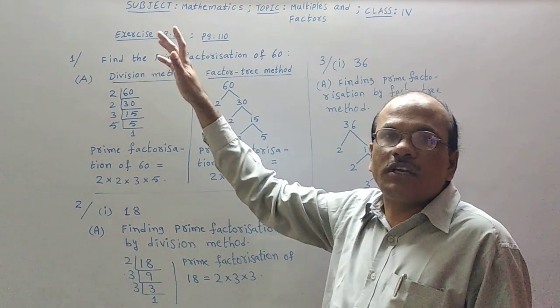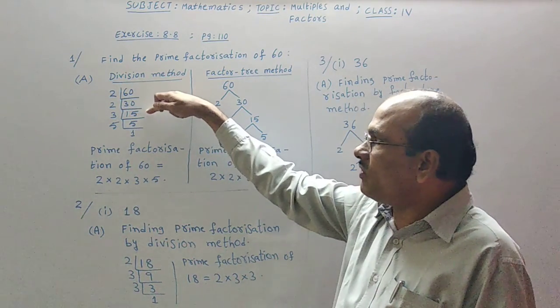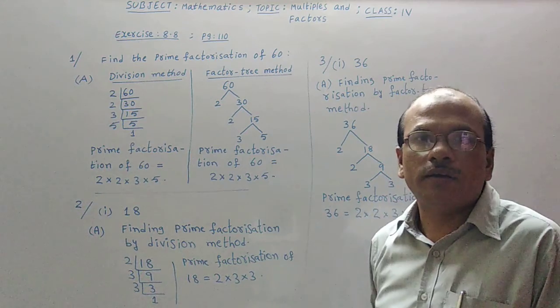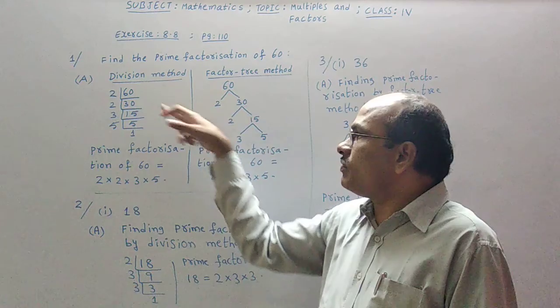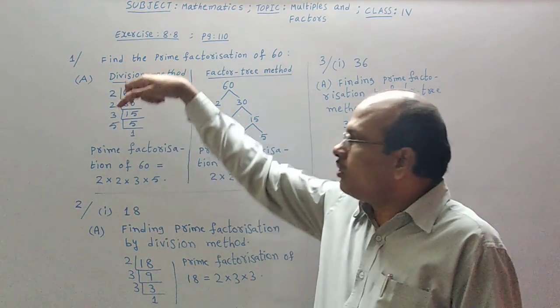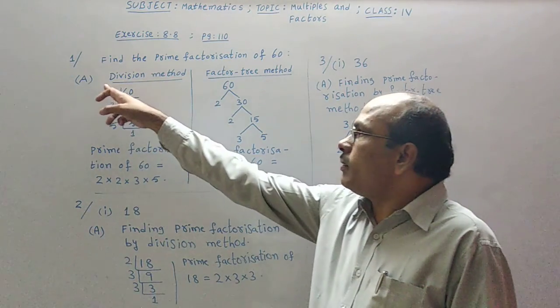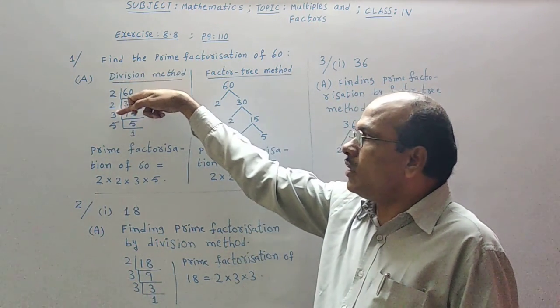Now again 2 table is not possible. Then 3 table. 3 times 5 is 15. Here 3 what we have taken is a prime number. Only prime numbers are to be selected to divide. 3 times 5 is 15. Afterwards 5 table. 5 times 1 is 5. So all the numbers what are taken here: 2, 2, 2, 3, 5, all are prime numbers.